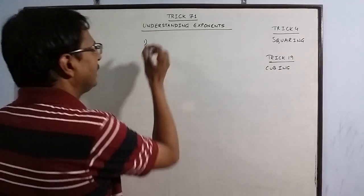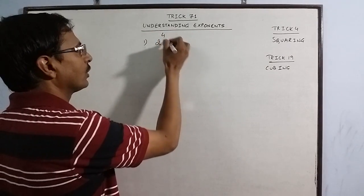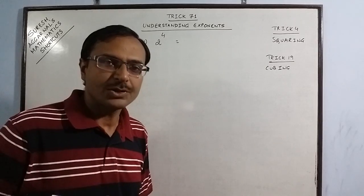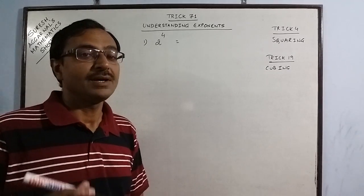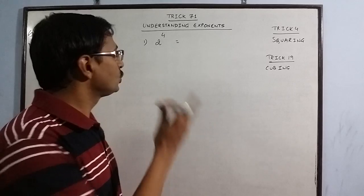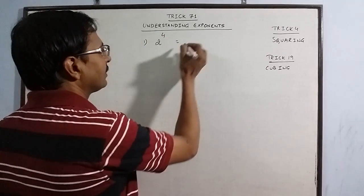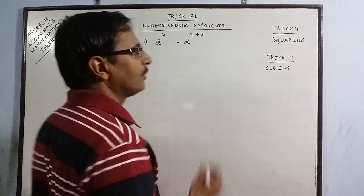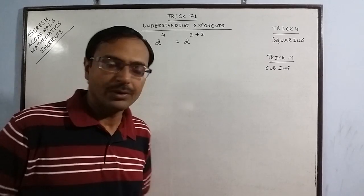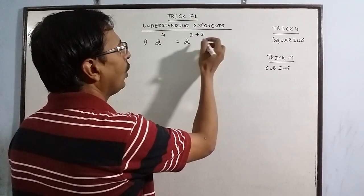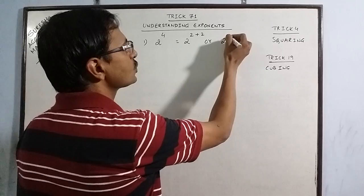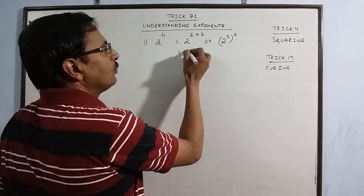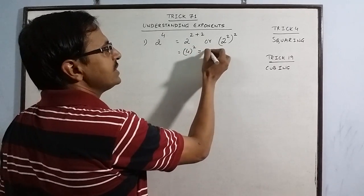Suppose we have to find 2 raised to power 4. This is obviously 16, we all know that, but this example is just to tell you the method in which squaring and cubing can be used here. Just break up this power. Actually, 2 raised to power 4 is 2 raised to power 2 plus 2. Whenever you have power 4, you have to square twice. You can write 2 plus 2 or you can write 2 square raised to power 2.